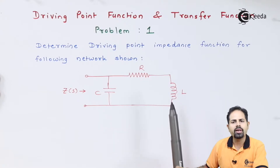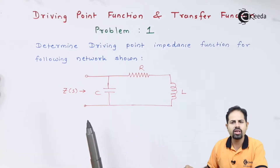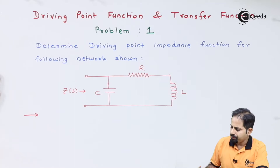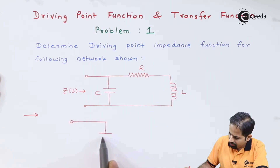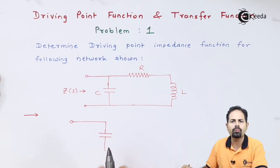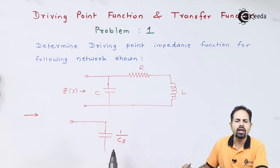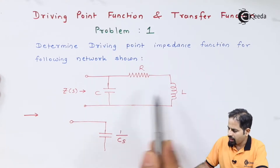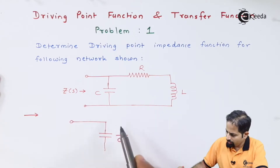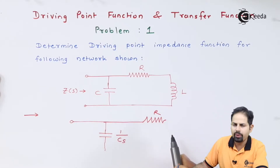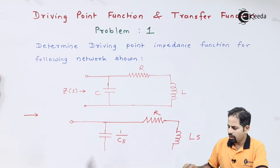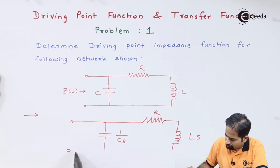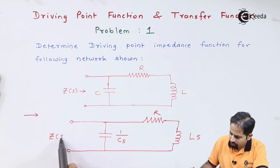Now, the reason we saw impedance transformation of inductor and capacitor will be useful here. When you solve this circuit, you have to transform all parameters into their respective impedances. The capacitor gets transformed to impedance 1/(CS). We have seen this in the video on impedance transform for resistor, inductor, and capacitor. The resistor is unaffected, so it will be R. The inductor will be L multiplied by S. So the impedance of the capacitor is 1/(CS) and the inductor is LS. We complete the circuit, and here we need to calculate Z(S).